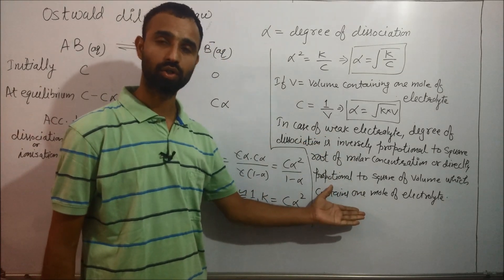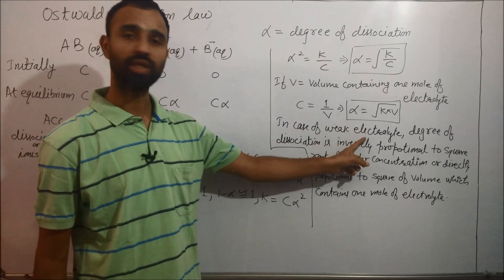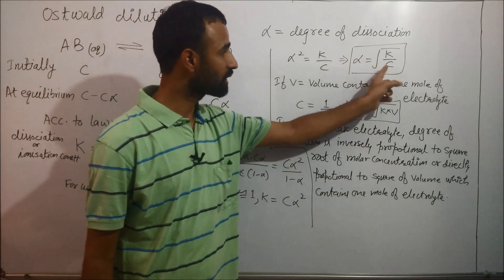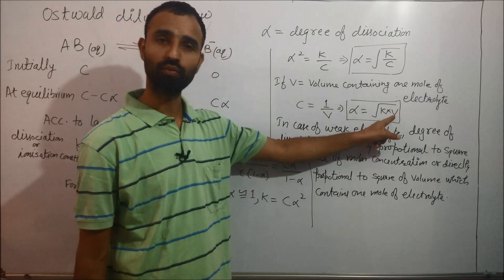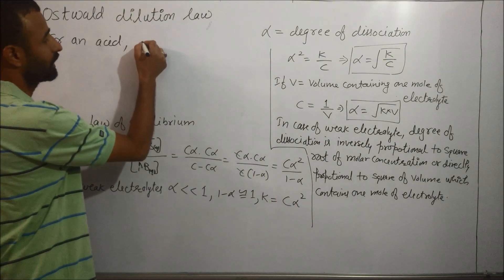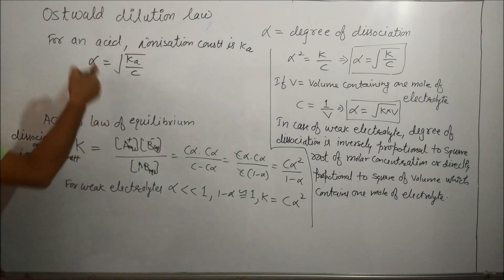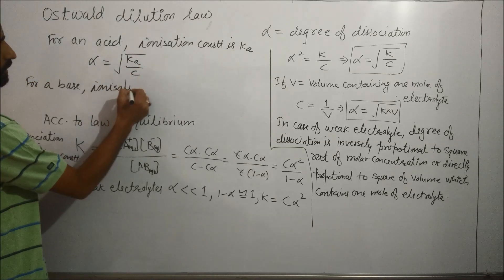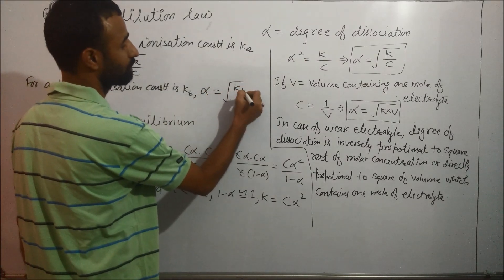This is Ostwald's Dilution Law: the degree of dissociation alpha is inversely proportional to the square root of concentration, or directly proportional to the square root of volume V containing 1 mole of electrolyte. For an acid, the ionization constant is Ka, so alpha equals the square root of Ka over C. For a base, the ionization constant is Kb, so alpha equals the square root of Kb over C.